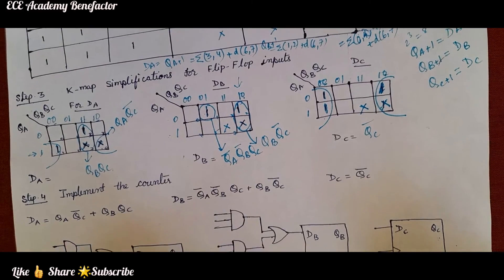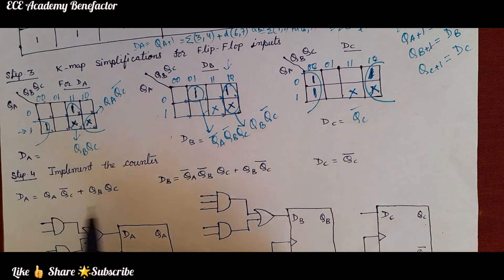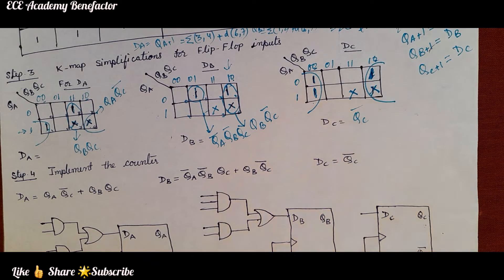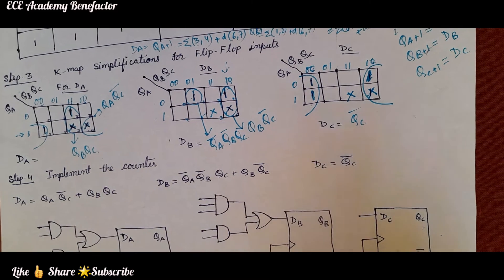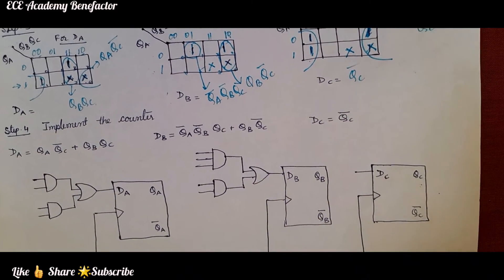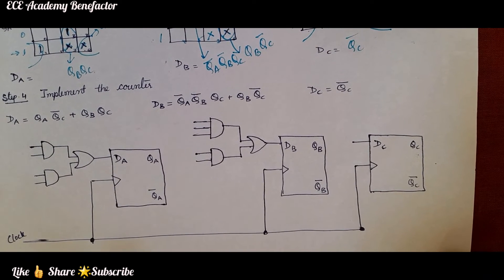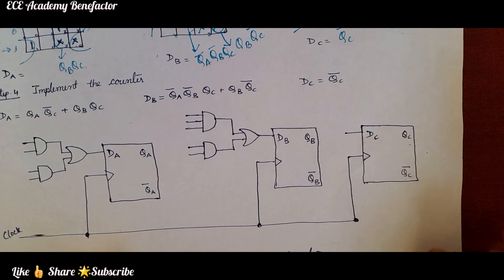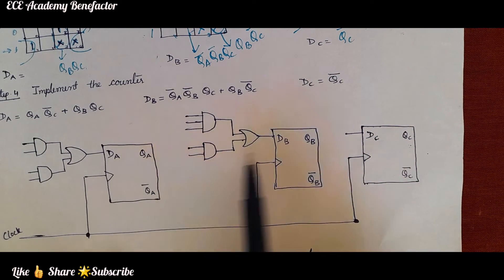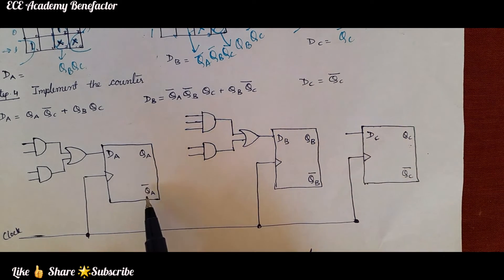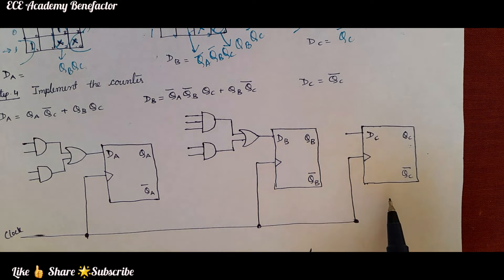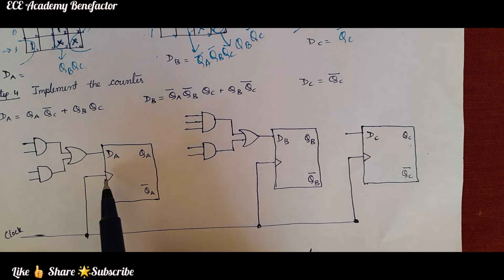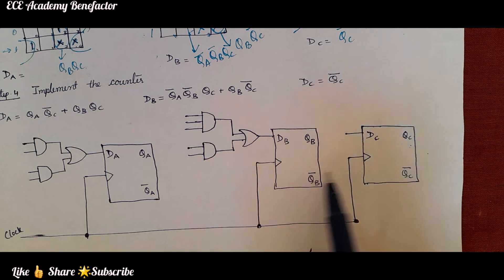So now we have the 3 equations: DA, DB, and DC. Based on the transition table we simplified the K-maps and obtained the equations for DA, DB, and DC. Now we need to draw the logic diagram. As we are drawing a synchronous mod-6 counter using D flip-flops, we draw 3 flip-flops — DA, DB, DC — with outputs QA, QĀ, QB, Q̄B, QC, Q̄C. Since it is synchronous, the same clock is given to all 3 flip-flops (positive edge triggered).